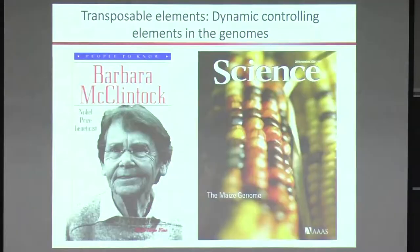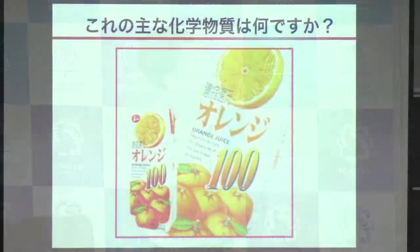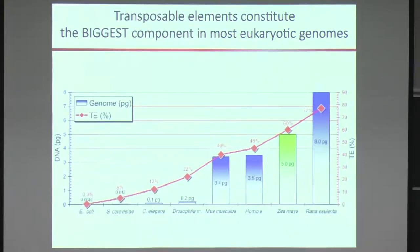So this was the title, and the transposable element was discovered by Dr. McClintock on corn. I was explaining how that was working, and this is the corn that has this particular transposon. There are three different types of transposon depending on how they replicate — RNA transposons and DNA transposons. Transposons are a major component in the genome; some species have more than 50 percent, and in humans we have 45 percent of the genome containing transposons.